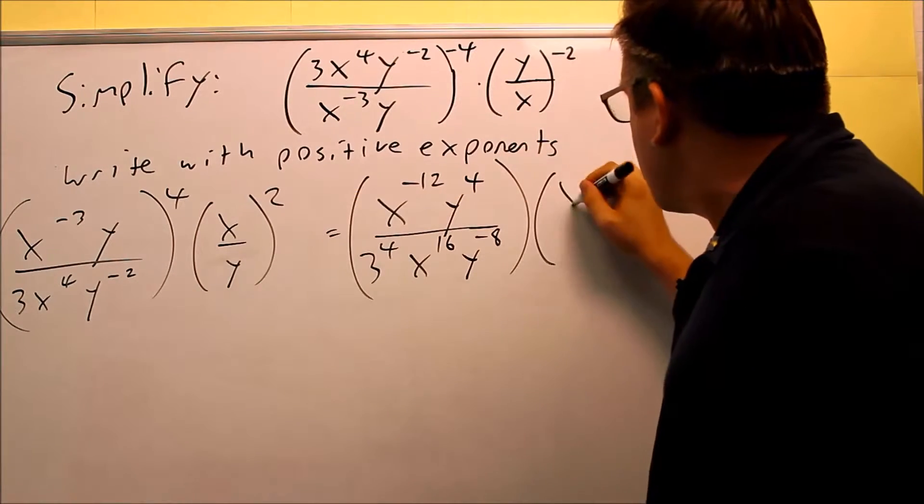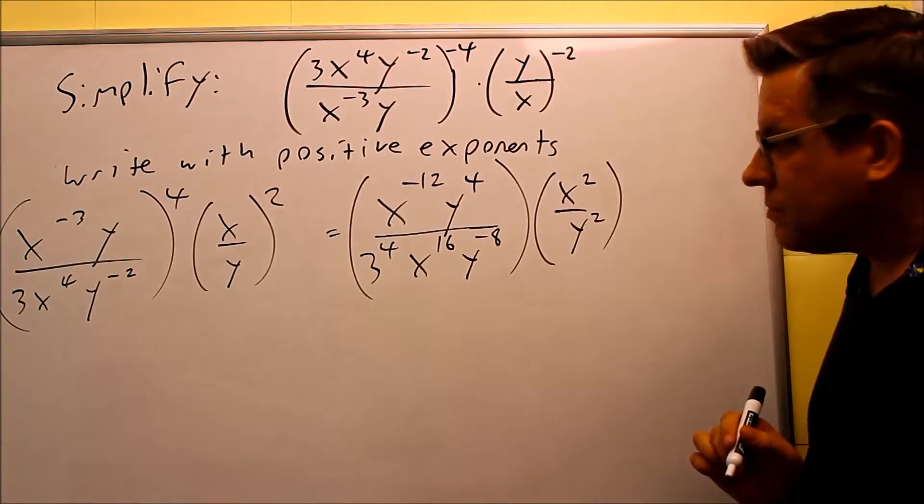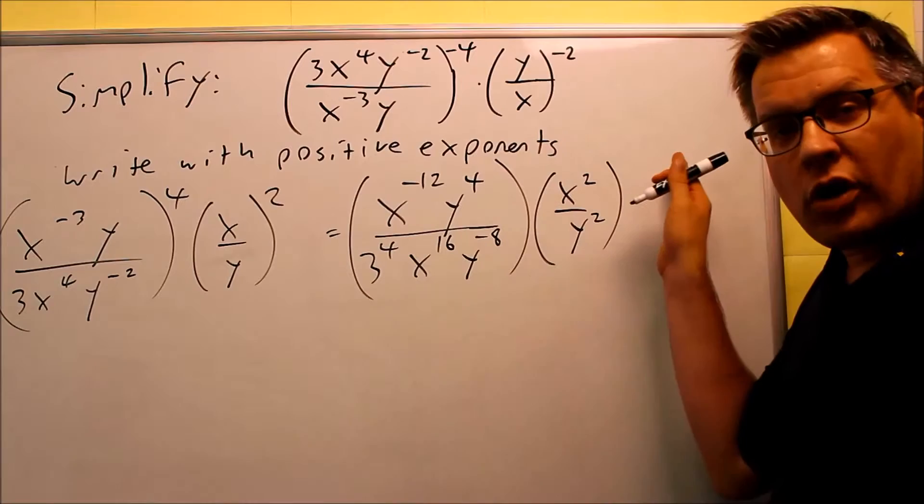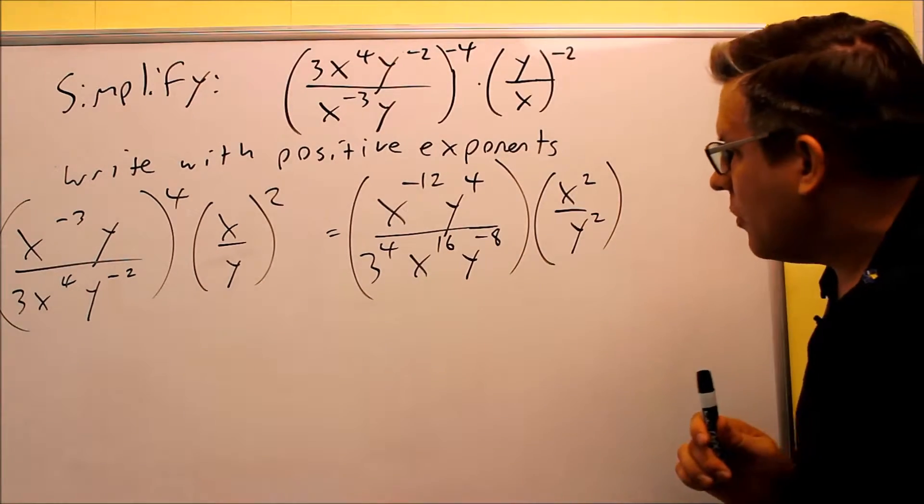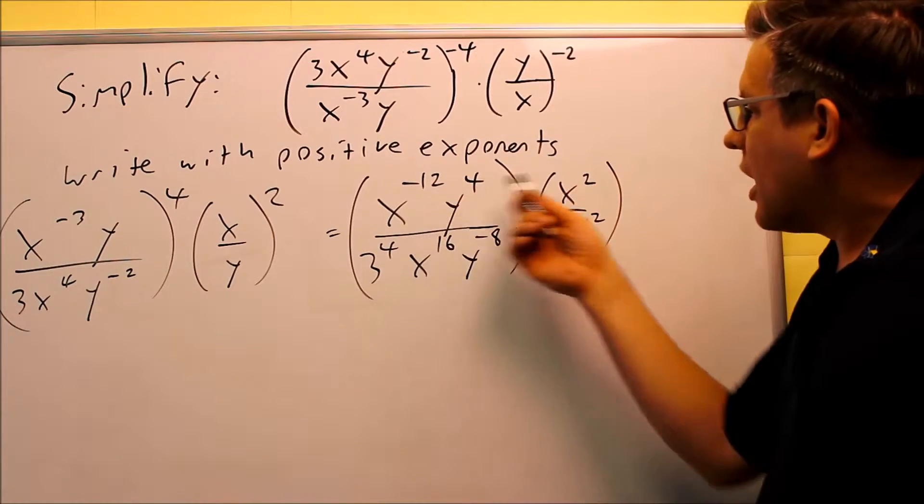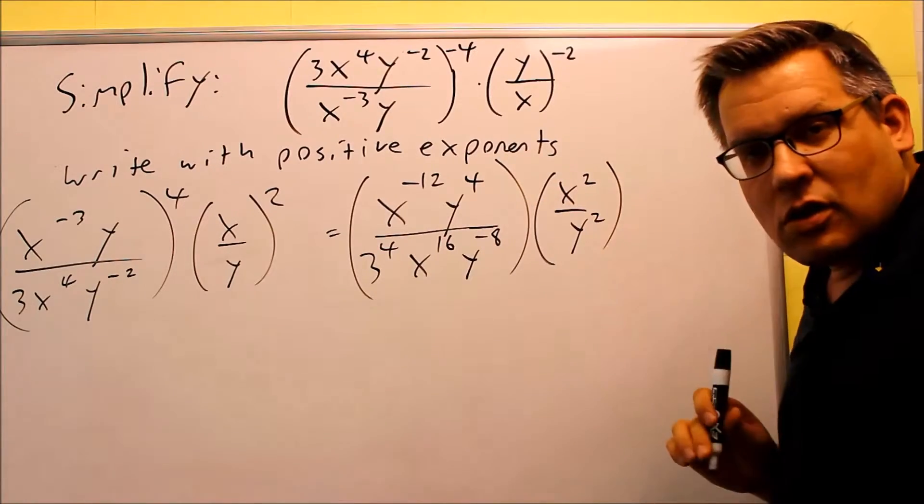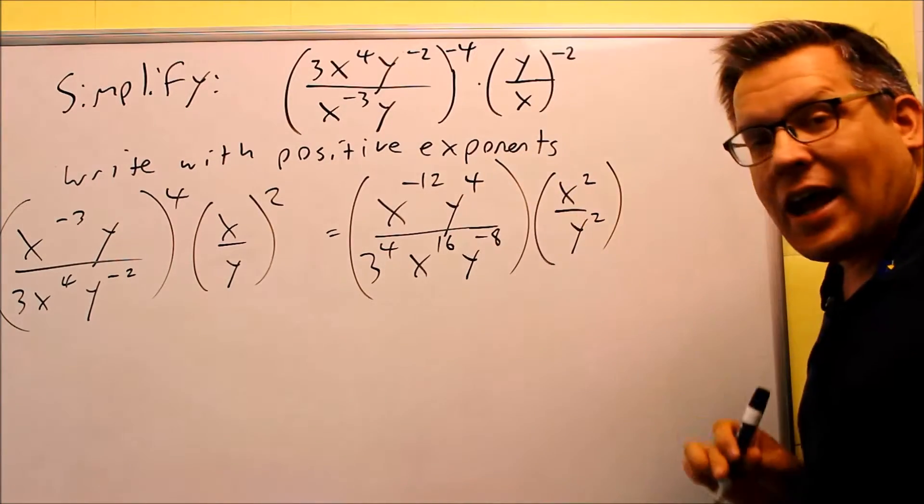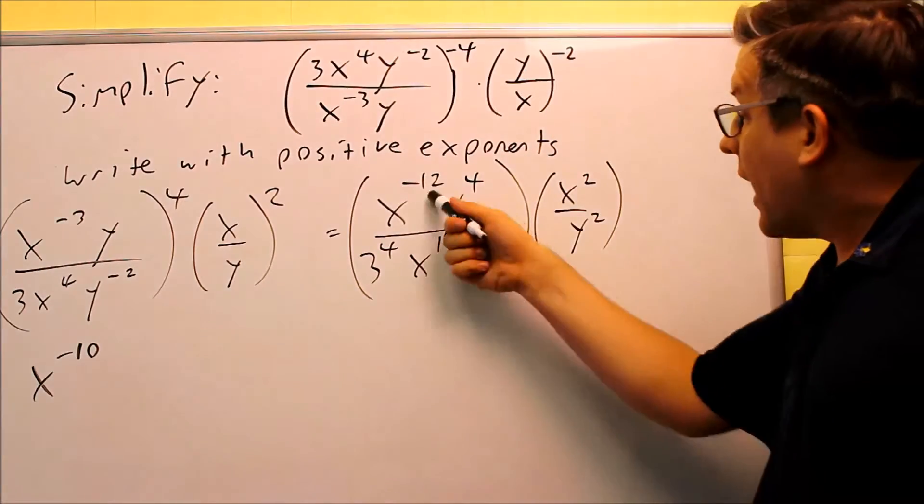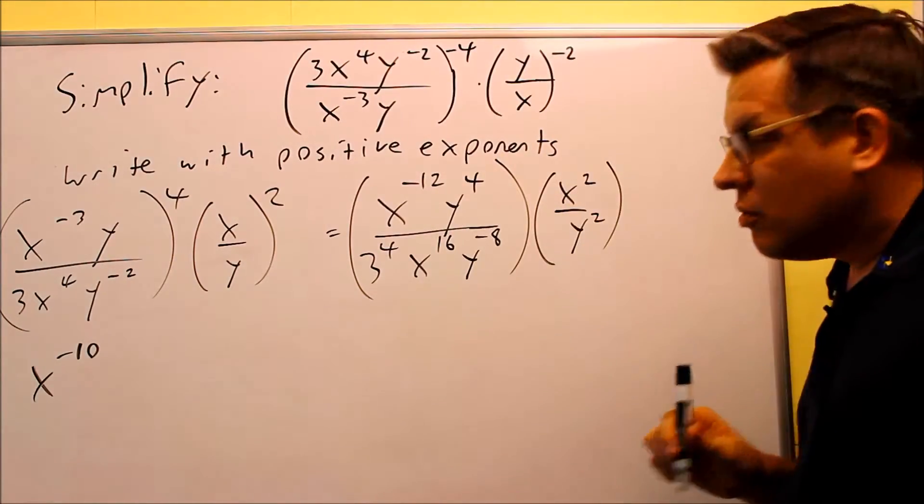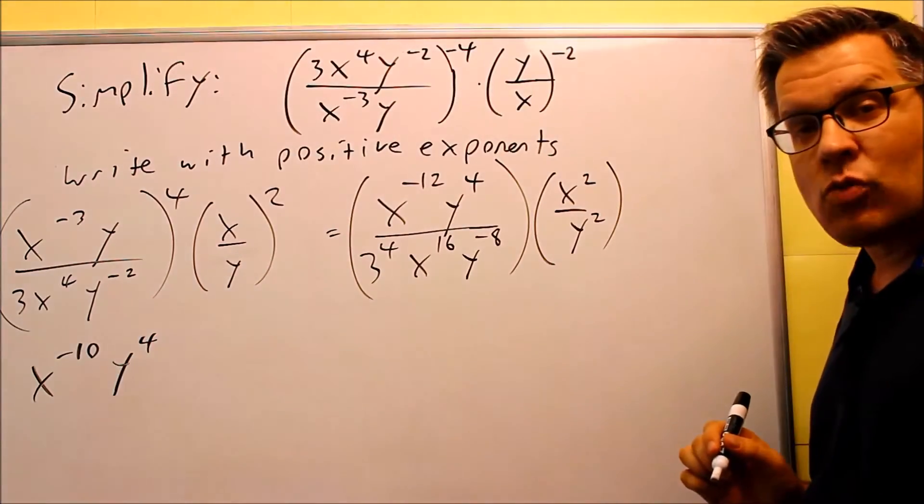For the second one, you're just going to distribute that inside, x squared over y squared. Now that we've gotten rid of the exponents, the next thing we're going to do is we're going to multiply across the top and multiply across the bottom. Now when you multiply across the top, we notice that we have two x's that have the same base. So if they have the same base, you're just going to add the exponents. So I get x to the negative 10, because we're adding that, negative 12 plus 2. There's no other y to combine it with, so we'll just leave it as y to the fourth power.